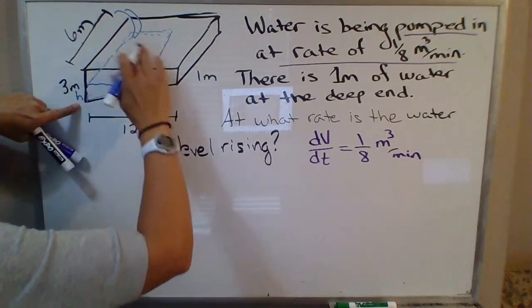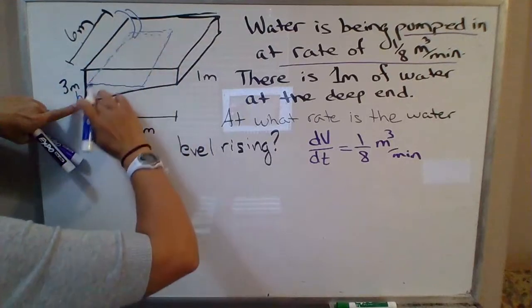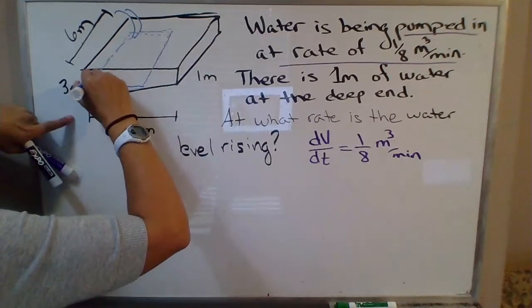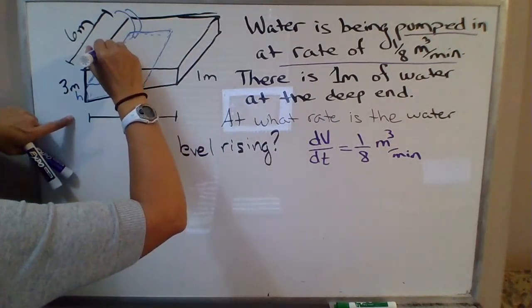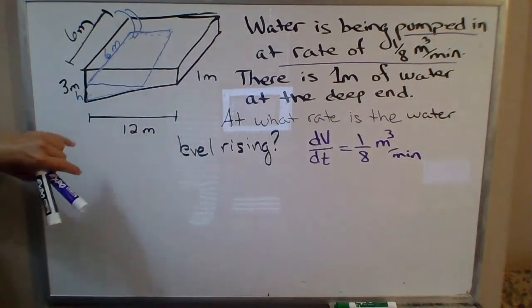You could find that volume by finding the area of this triangle and then multiplying by this dimension here, which is going to be six. So we're assuming that there's enough water in the pool already that it's a meter deep, so the water must be spread all the way across. So we can assume that in the water here, this dimension is a constant six meters.